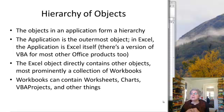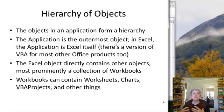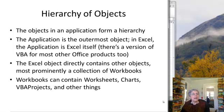The objects in an application form a hierarchy, and we start with the application itself. There's a version of VBA for most Microsoft Office products and other things as well. In VBA, the application is the topmost object, and for Excel VBA, the application is Excel. This Excel object directly contains other objects — workbooks is probably the most prominent one. Workbooks in turn contain objects themselves like worksheets, charts, VBA projects, and so on.